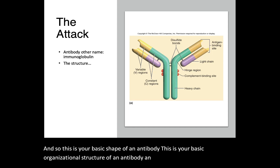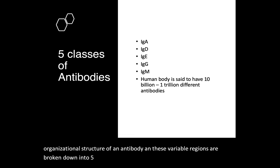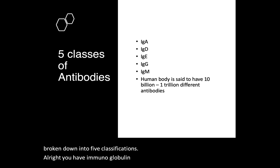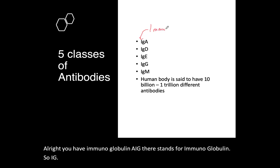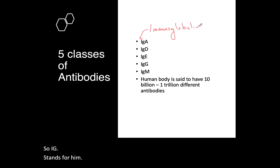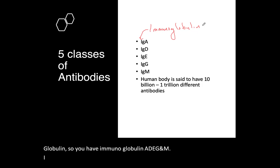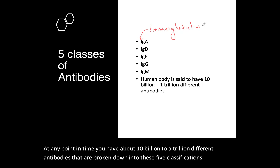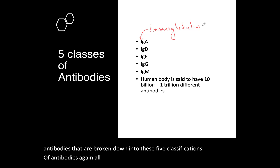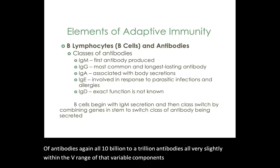These variable regions are broken down into five classifications. You have immunoglobulin A, D, E, G, and M — where Ig stands for immunoglobulin. At any point in time, you have about 10 billion to a trillion different antibodies broken down into these five classifications. All 10 billion to a trillion antibodies vary slightly within the V region, or the variable component of the antibody.